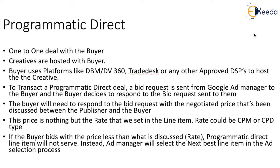Programmatic direct is a one-to-one deal with the buyer — you have one buyer and one publisher. The buyer will negotiate with you online. The advertiser or the buyer will not have to communicate with the publisher offline. However, if they wish to, they can communicate with the publisher, but only after cracking a deal. So it is basically a one-to-one deal with the buyer.